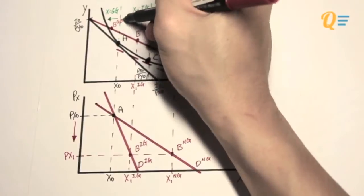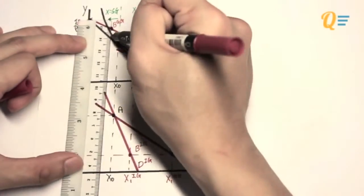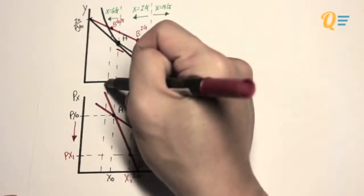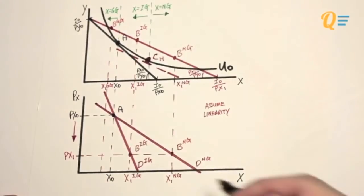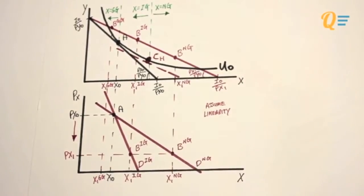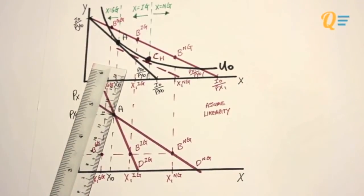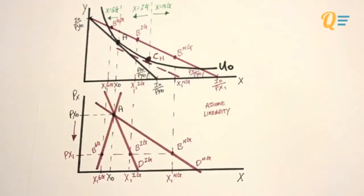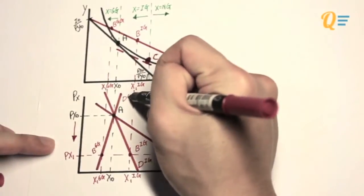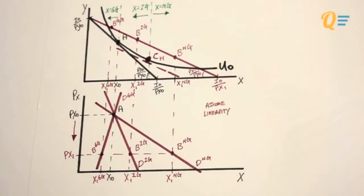And lastly, if X were to be a Giffen good, what I have is point B over here. And I'm just going to call this X1 GG. So I've got another point right here. And I can just connect points A and the new point B. So I've got an upward sloping demand curve, which shows that good X is a Giffen good.